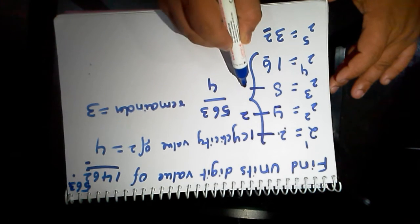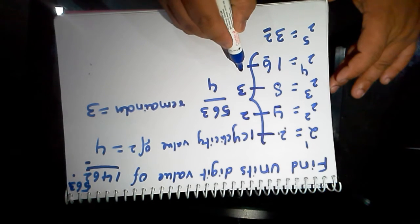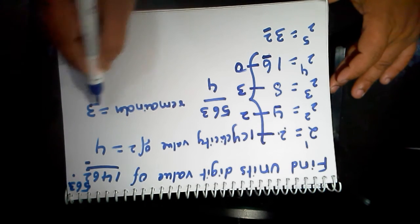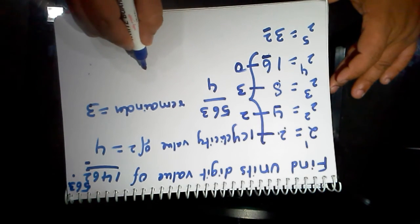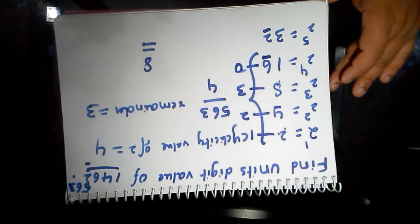If the remainder is 3, the units digit value is 8. If the remainder value is 0, the units digit value is 6. Since the remainder is 3, the units digit value is 8. Thank you.